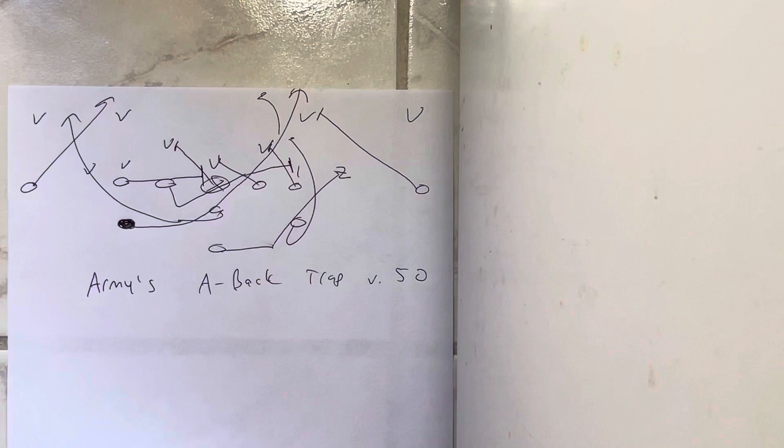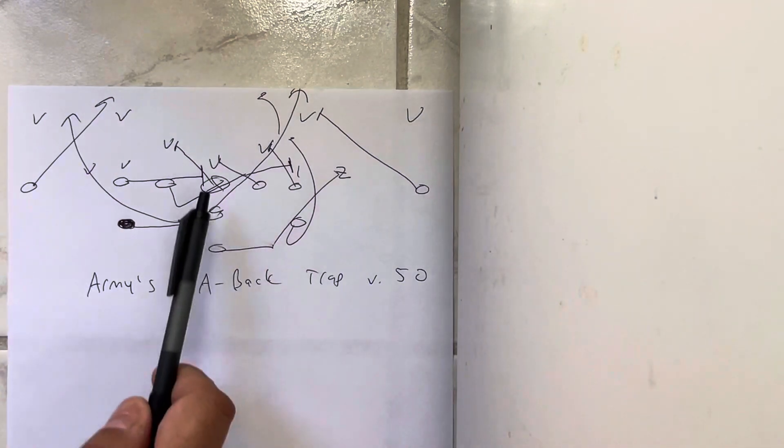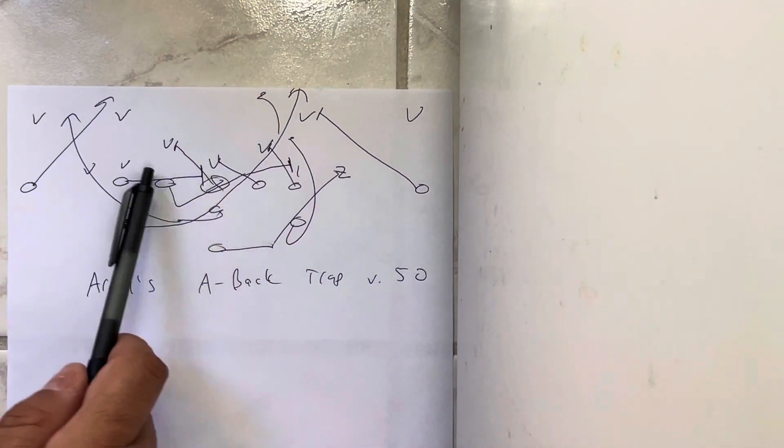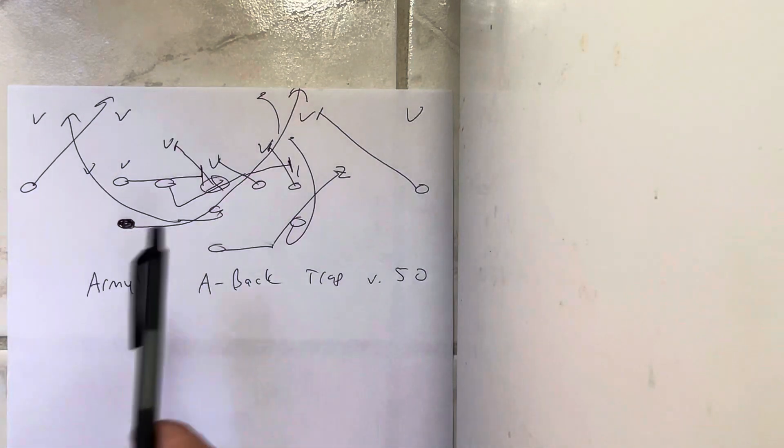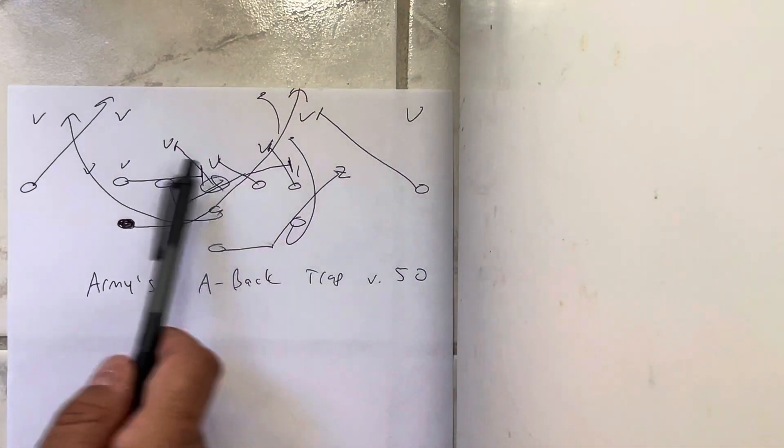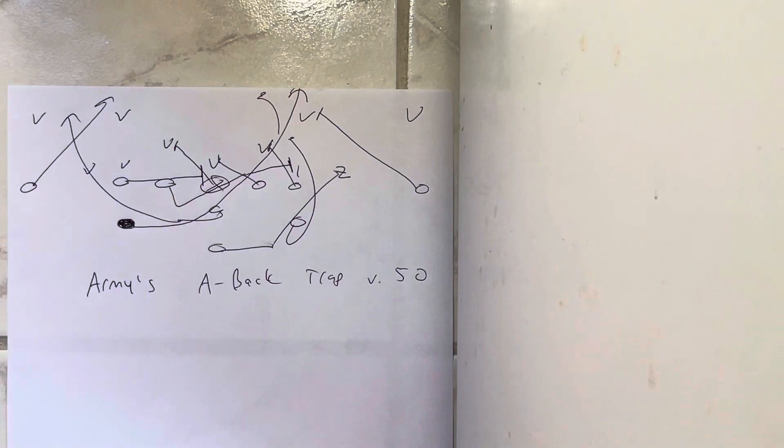So the best way to do it is have the guard block down, and then the center, who usually is blocking back on an A-gap player or a two-or-three technique, he'll just basically protect the backside A-gap.